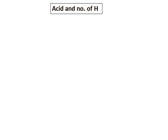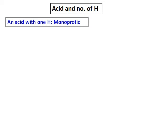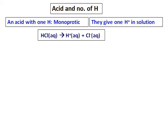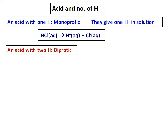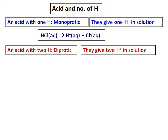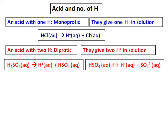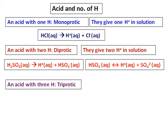We have different kinds of acids depending on the number of hydrogens. If an acid has one hydrogen, we call it monoprotic — it gives one hydrogen ion in solution. For example, HCl gives H⁺ and Cl⁻. If an acid has two hydrogens, we call it diprotic — it gives two hydrogen ions. For example, sulfuric acid first gives H⁺ and HSO₄⁻, then the second ionization gives H⁺ and SO₄²⁻.